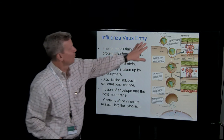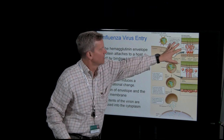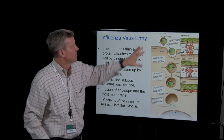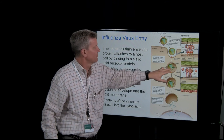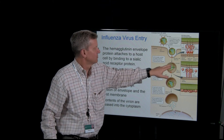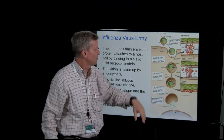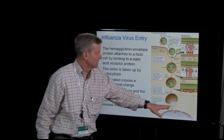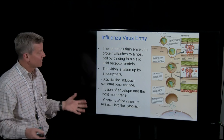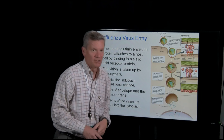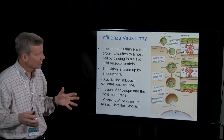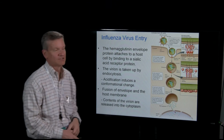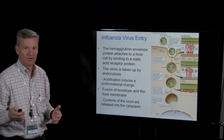You need to know that the acidic environment releases the segmented genome of the virus, and then we get fusion of the viral membrane with the endosomal membrane, releasing the segmented genome — which actually enters the nucleus. So even though this is an RNA virus, the RNA segments enter the nucleus and begin replication.